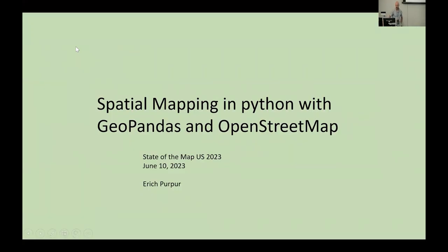Hey, everybody. My name is Aaron Kerper and I work at the University of Virginia in Charlottesville, Virginia — about an hour west of here. Today I'm going to talk about a little project I was doing earlier this spring, sort of related to data equity and data justice.